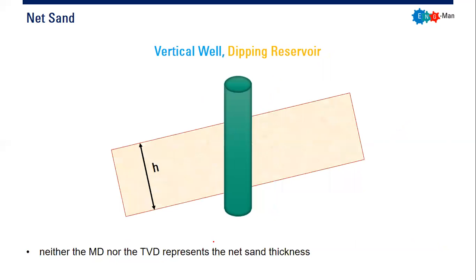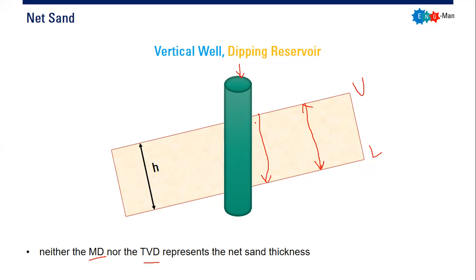For a vertical well with a dipping reservoir, if this is the upper boundary and this is the lower boundary, then perpendicular to those boundaries gives us the net sand thickness. In this case, neither the MD nor the TVD represents the net sand thickness. Practically speaking, we might consider the TVD to be H, although it's not accurate.